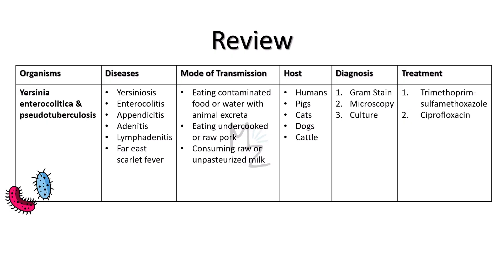Quick recap: the organisms discussed today are Yersinia enterocolitica and Yersinia pseudotuberculosis. They cause Yersiniosis, enterocolitis, appendicitis, adenitis, lymphadenitis, and far east scarlet fever. They are transmitted by eating contaminated food or water with animal excreta, eating undercooked or raw pork, or consuming raw or unpasteurized milk. Hosts include humans, pigs, cats, cattle, and dogs. Diagnosis is based on gram staining, microscopy, and culture. Treatment involves trimethoprim-sulfamethoxazole or ciprofloxacin.